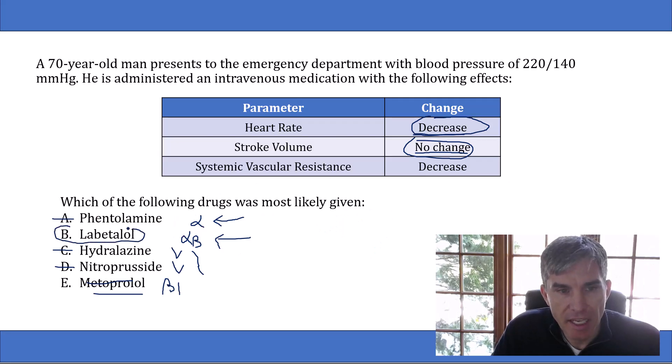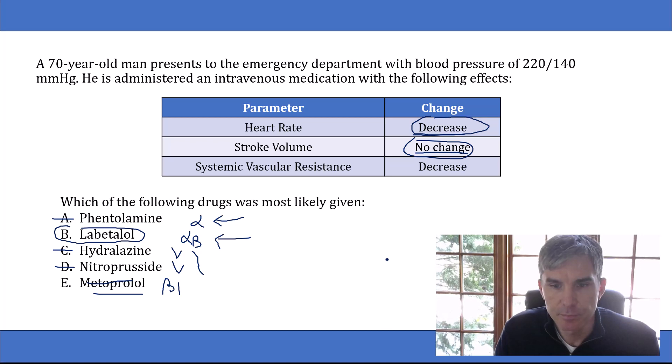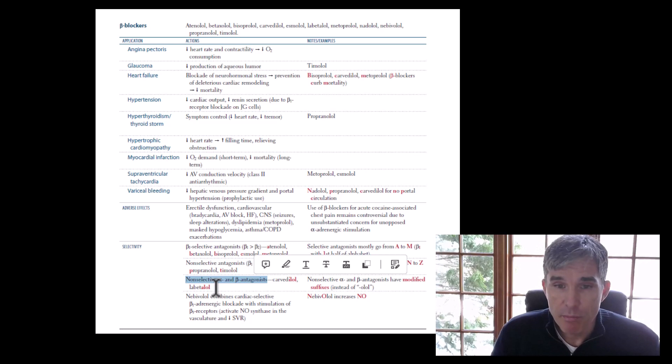So going back to our question, labetalol is the answer, but this is going to drive a lot of you nuts, because almost certainly you were never taught that labetalol, despite being a beta blocker, has no effect on stroke volume. And here's what I'm going to tell you about this. You shouldn't bother worrying about this fact. This is such a tiny piece of minutia about the drug labetalol. It is not worth learning. And as I'll show you in just a second, it's not in First Aid. And information that is not in First Aid, I don't think is worth wasting your time on learning. So here's the First Aid page on beta blockers. And it mentions that labetalol is a non-selective alpha and beta antagonist, just like we talked about. But there's no mention of this peculiar effect of labetalol that it doesn't change stroke volume. So I don't think it's worth memorizing that.